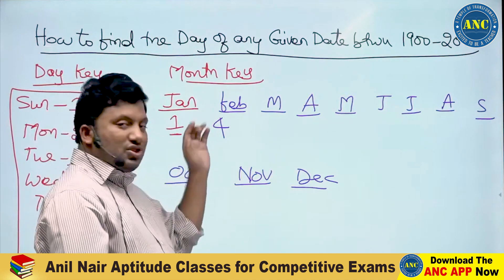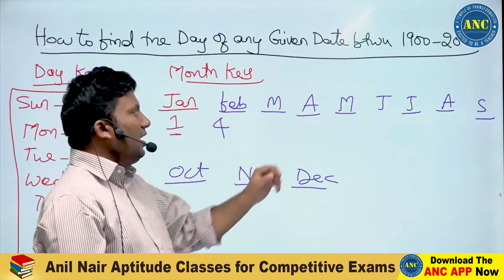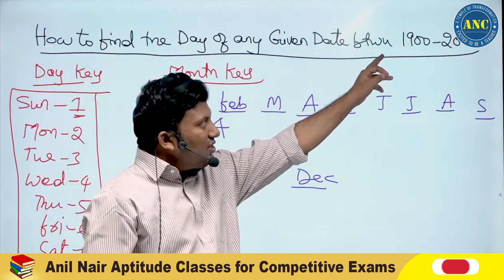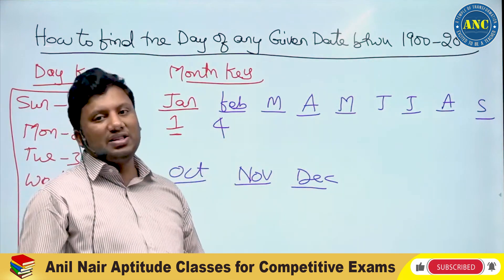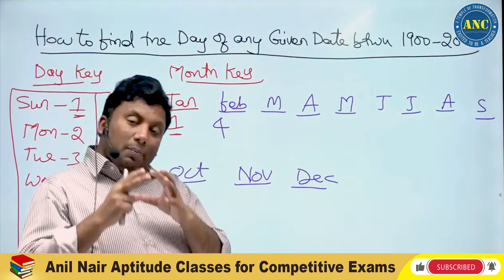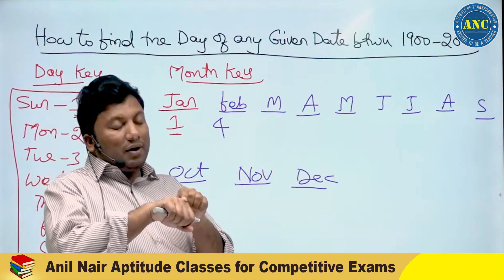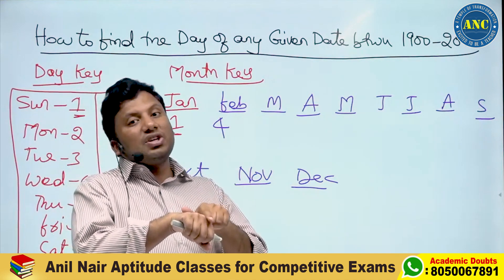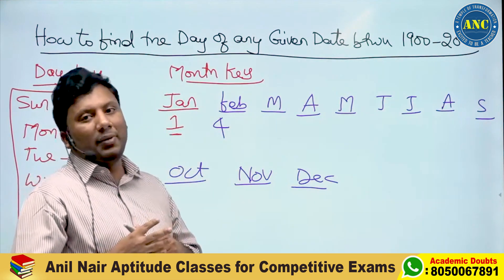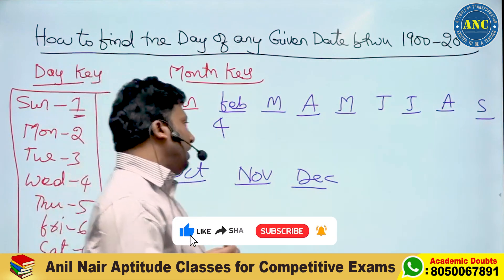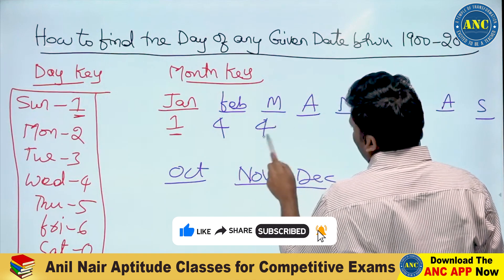We are starting from 1900 to 2000, and the beginning year 1901 is a non-leap year. February contains 28 days. 28 divided by 7: seven 4s are 28, remainder 0. So 4 plus 0 equals 4 — the month key for March is 4.